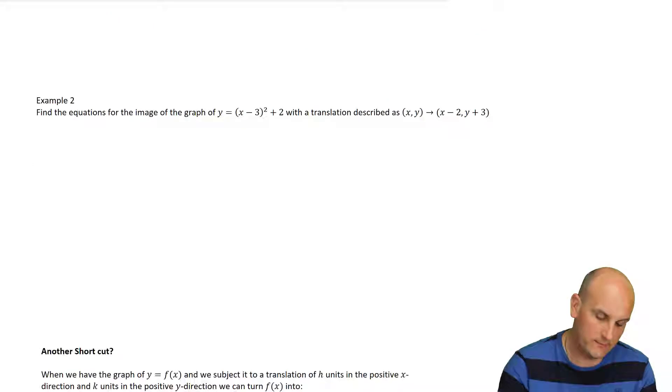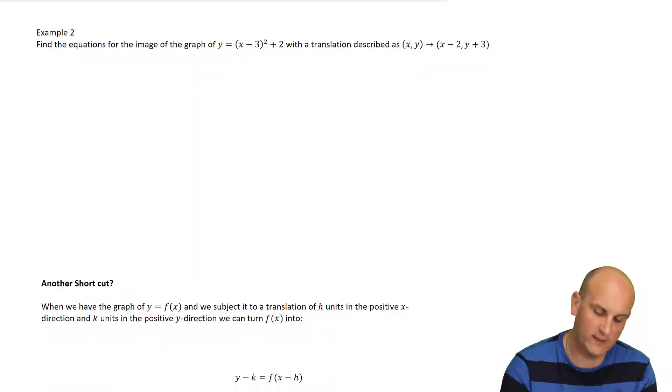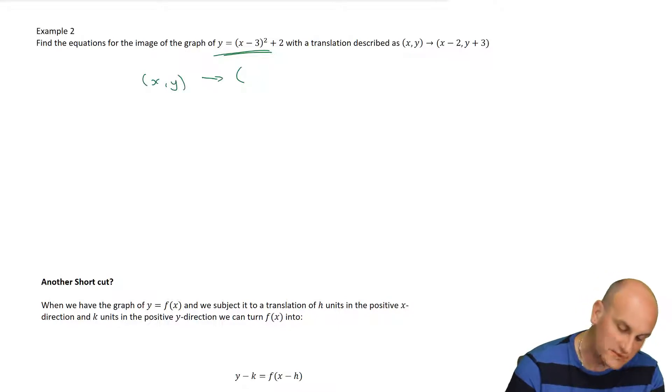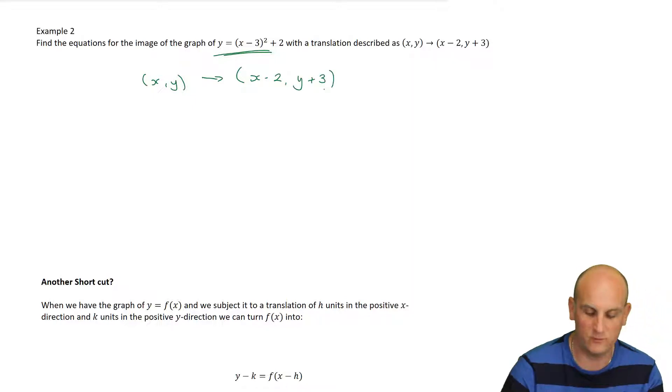Alright, let's just do one more example, because people seem to hammer away at the idea of doing examples. So, I've got y is equal to x. I've got my original function here. So, it's actually told me that x, y is going to be subjected to x minus 2, y plus 3. So, what does that tell me? It means I'm going to move my whole graph two units to the left, and I'm going to move it, sorry, two units to the left, do it the right way for the camera, and three units up.